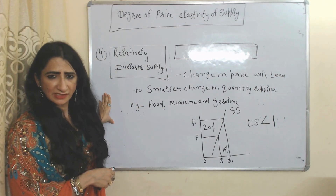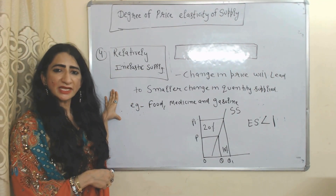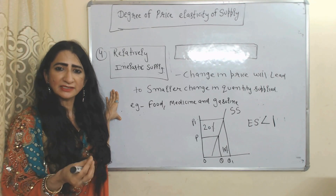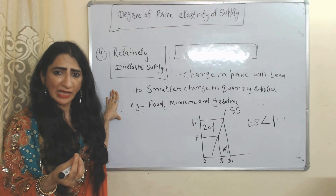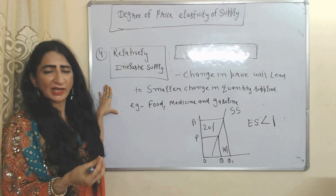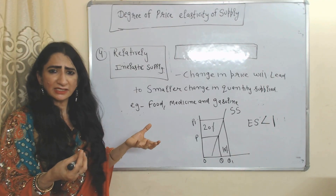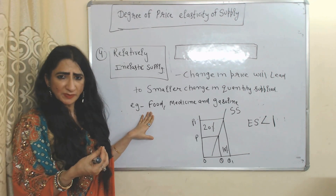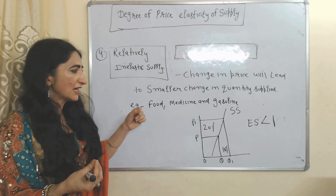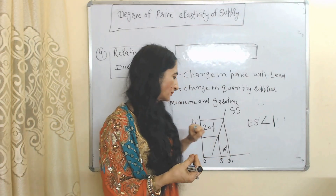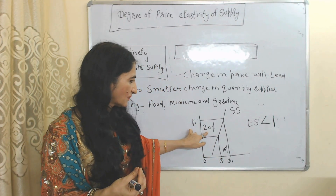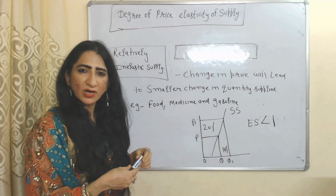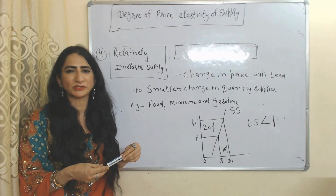Now we are going to talk about relatively inelastic supply, which means a change in price leads to a smaller percentage change in supply. For example, a 20 percent increase in price leads to only a 10 percent increase in supply. This is possible in the case of food, medicine, and gasoline, and the elasticity of supply is less than one. In the diagram, price increases 20 percent but supply increases only 10 percent, with SS as the supply curve. That is all about supply — thank you so much for watching.